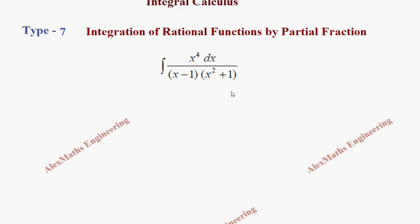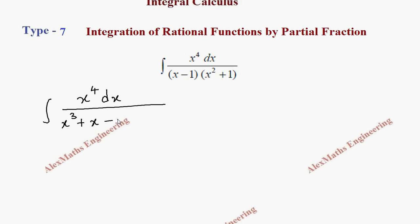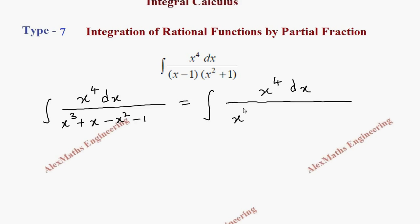Now we are going to expand the denominator. The numerator is x to the power 4 dx, and the denominator — if I multiply it will become x cubed plus x, then minus 1, if I multiply minus x squared minus 1. On rearranging this we get x to the power 4 dx whole divided by x cubed minus x squared plus x minus 1.